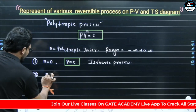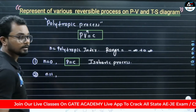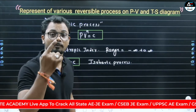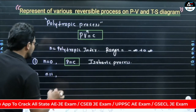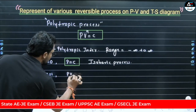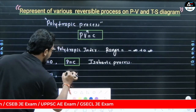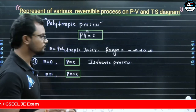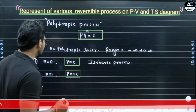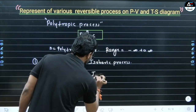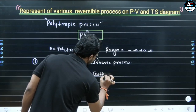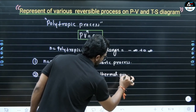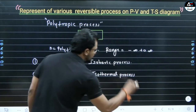When we put N = 1 into the polytropic equation, what process do we get? We get PV = constant. As we have seen, PV = constant represents the isothermal process. So we write this as isothermal process. Okay, clear?